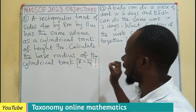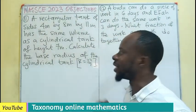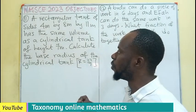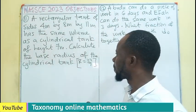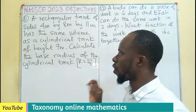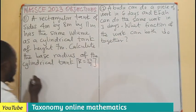A rectangular tank of side 4 meter by 8 meter by 11 meters has the same volume as a cylindrical tank of height 7 meters. Calculate the base radius of the cylindrical tank. So let's begin.